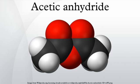Production: Acetic anhydride was first synthesized in 1852 by the French chemist Charles Gerhardt by heating potassium acetate with benzoyl chloride.